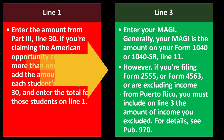However, if you're filing Form 2555 or Form 4563, or are excluding income from Puerto Rico, you must include on line 3 the amount of income you excluded. For details, see Publication 970.